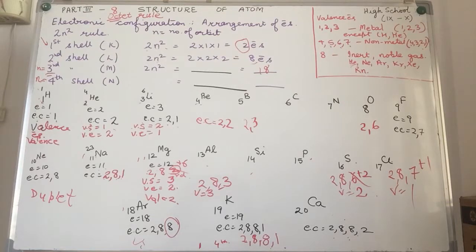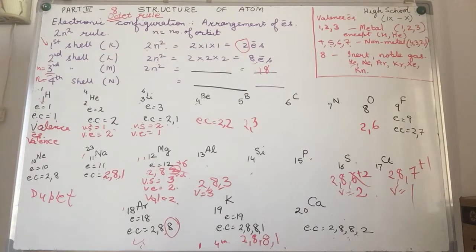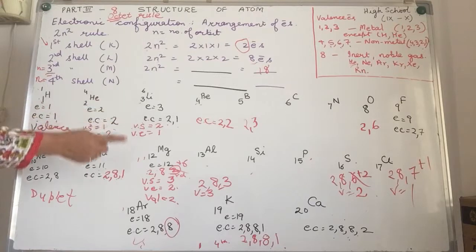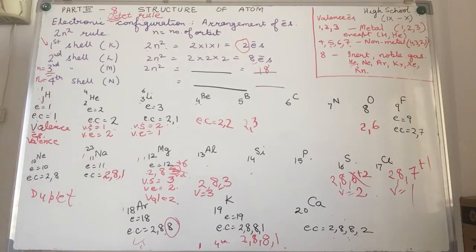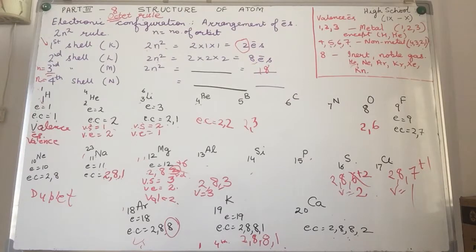Valency means the combining capacity of an element — when it undergoes a chemical reaction or bond with another element, how many electrons it uses to form that bond. Lithium can spare 1, magnesium can spare 2, sodium can spare 1. If you like the video, please subscribe to Learning Chemistry is Fun on YouTube. Feedback is welcome. Have a happy day!